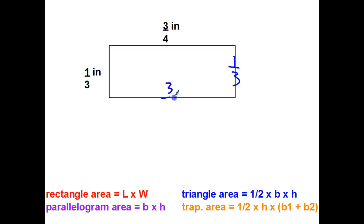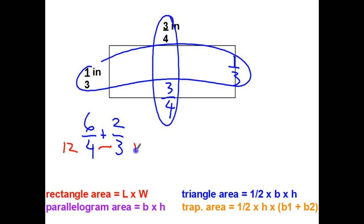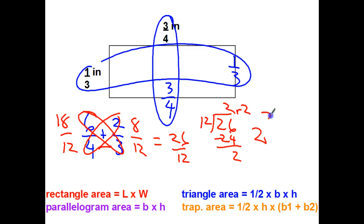Here's one to try. Getting the sides labeled: three-fourths plus three-fourths is six-fourths; one-third plus one-third is two-thirds. To get the least common denominator I'll cross multiply: four times three is 12. Six times 3 is 18, four times 2 is 8 — giving eighteen-twelfths plus eight-twelfths equals twenty-six twelfths. Dividing: 12 goes into 26 twice with a remainder of 2 — two and two-twelfths. Since both 2 and 12 are even, divide both by 2: two and one-sixth inches.